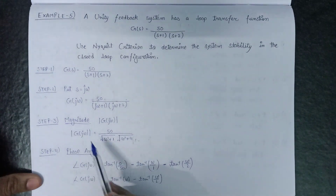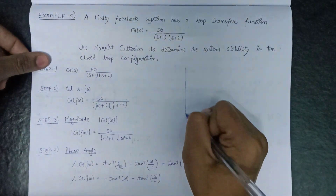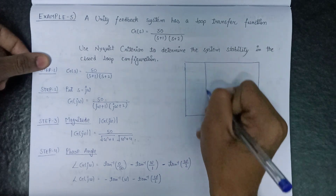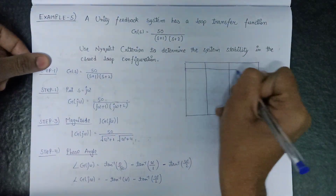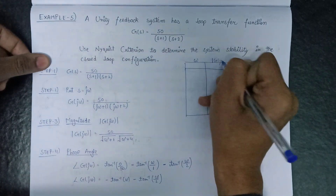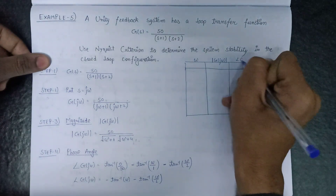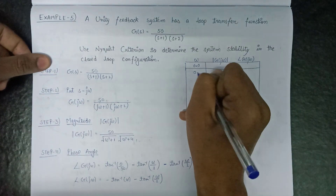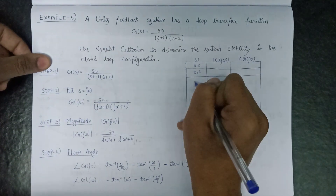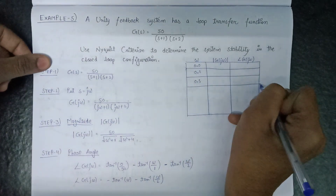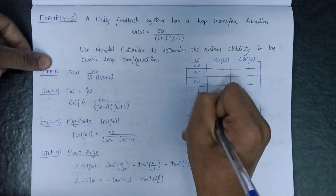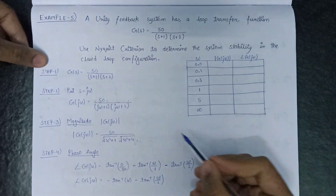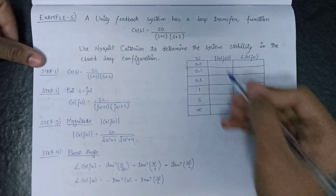On the basis of the phase angle and magnitude, we form a table. The table has values of ω at 0, 0.2, 0.5, 1, 5, and infinity. For each value of ω, we calculate the corresponding magnitude |G(jω)| and phase angle. I had calculated these values previously, so I can fill them in quickly.